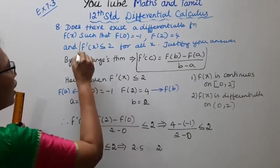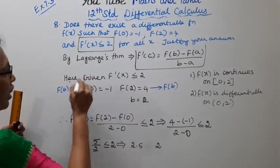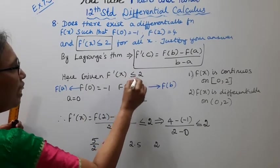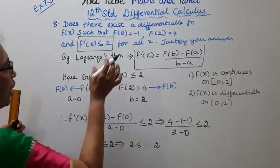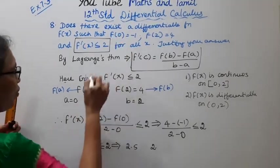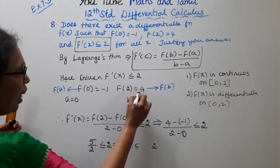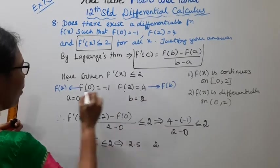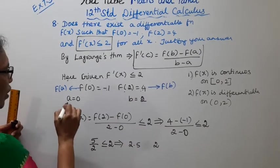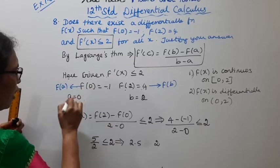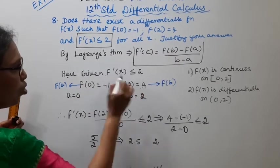Given f'(x) ≤ 2, also given f(0) = -1, f(2) = 4. Then we have f(b) and f(a). So a = 0, and b = 2.